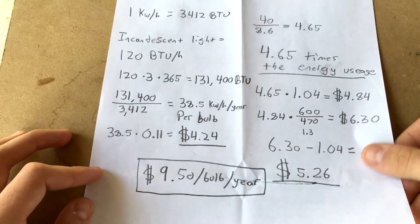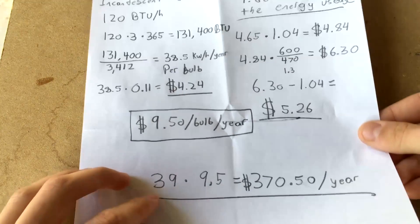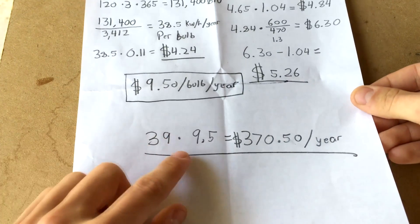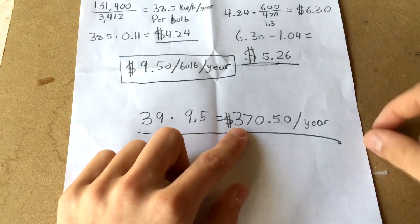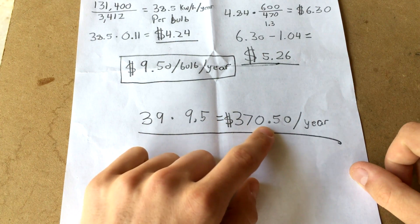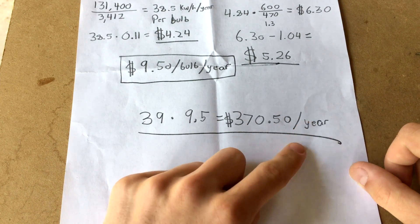Well, I went through the house, counted the light bulbs, and came up with 39 light bulbs. And 39 light bulbs times $9.50 per bulb per year means a savings of $370.50 per year. That is absolutely enormous, and your family could save this much too if you switched all of your lights to LED.